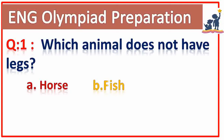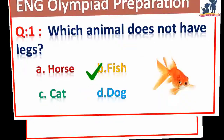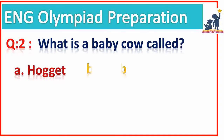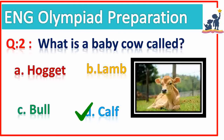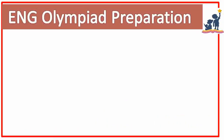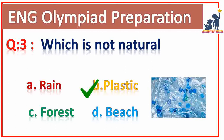Now our interactive session starts from question number one. Which animal does not have legs? Fish. Very good. Question number two: what is a baby cow called? A baby cow is called a cub. Very good. Question number three: what is not natural? Plastic is not natural. Very good.